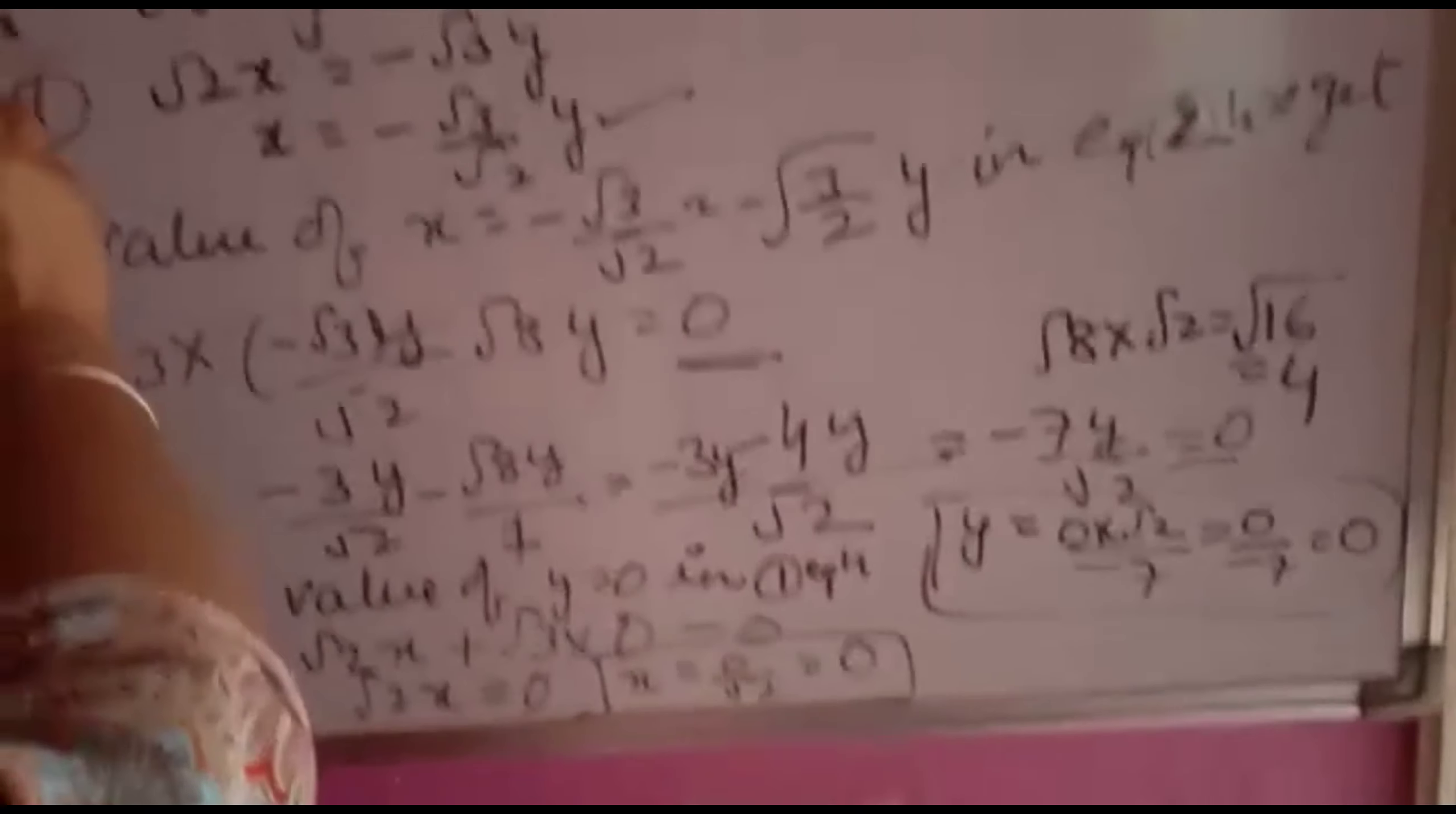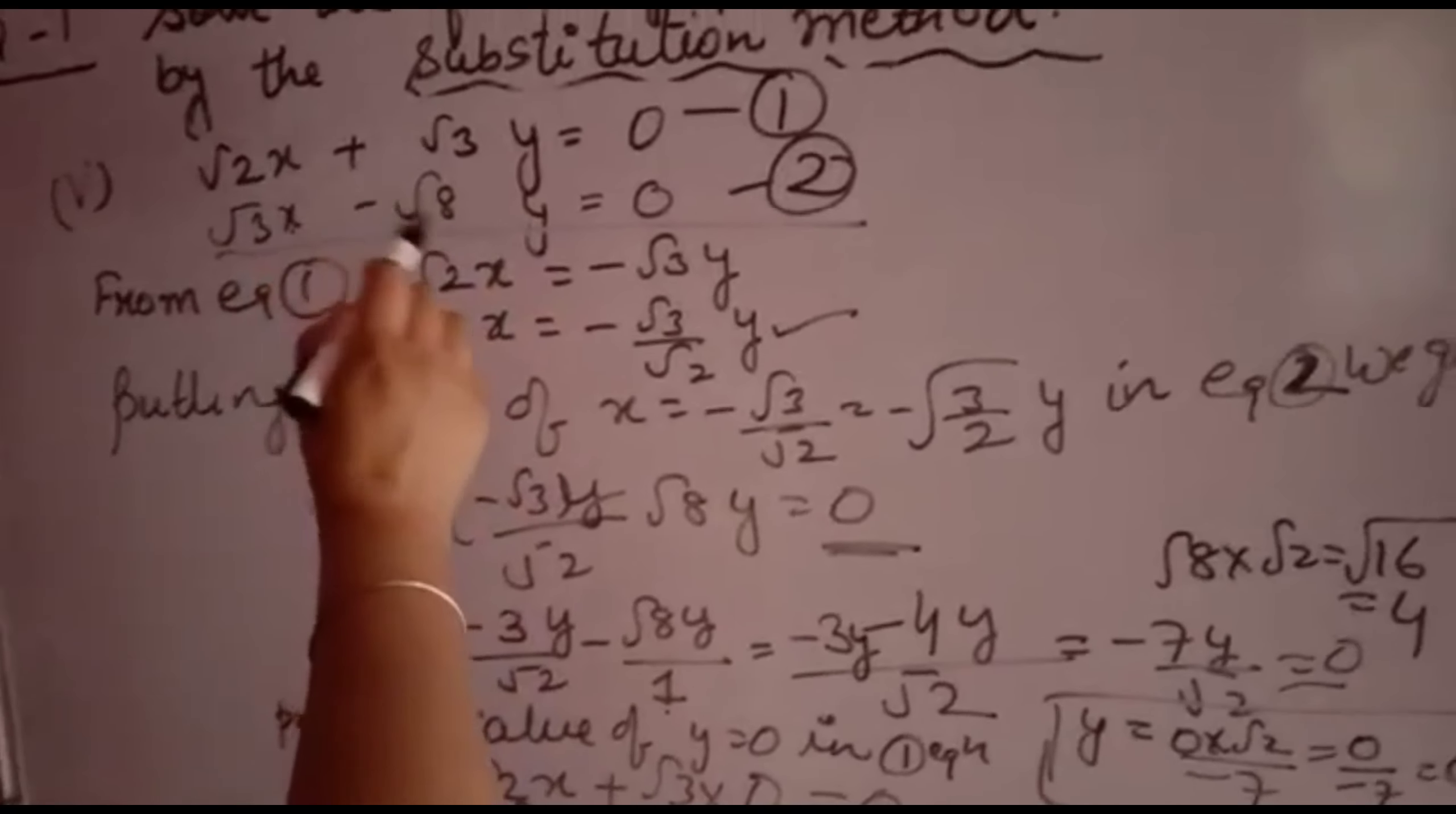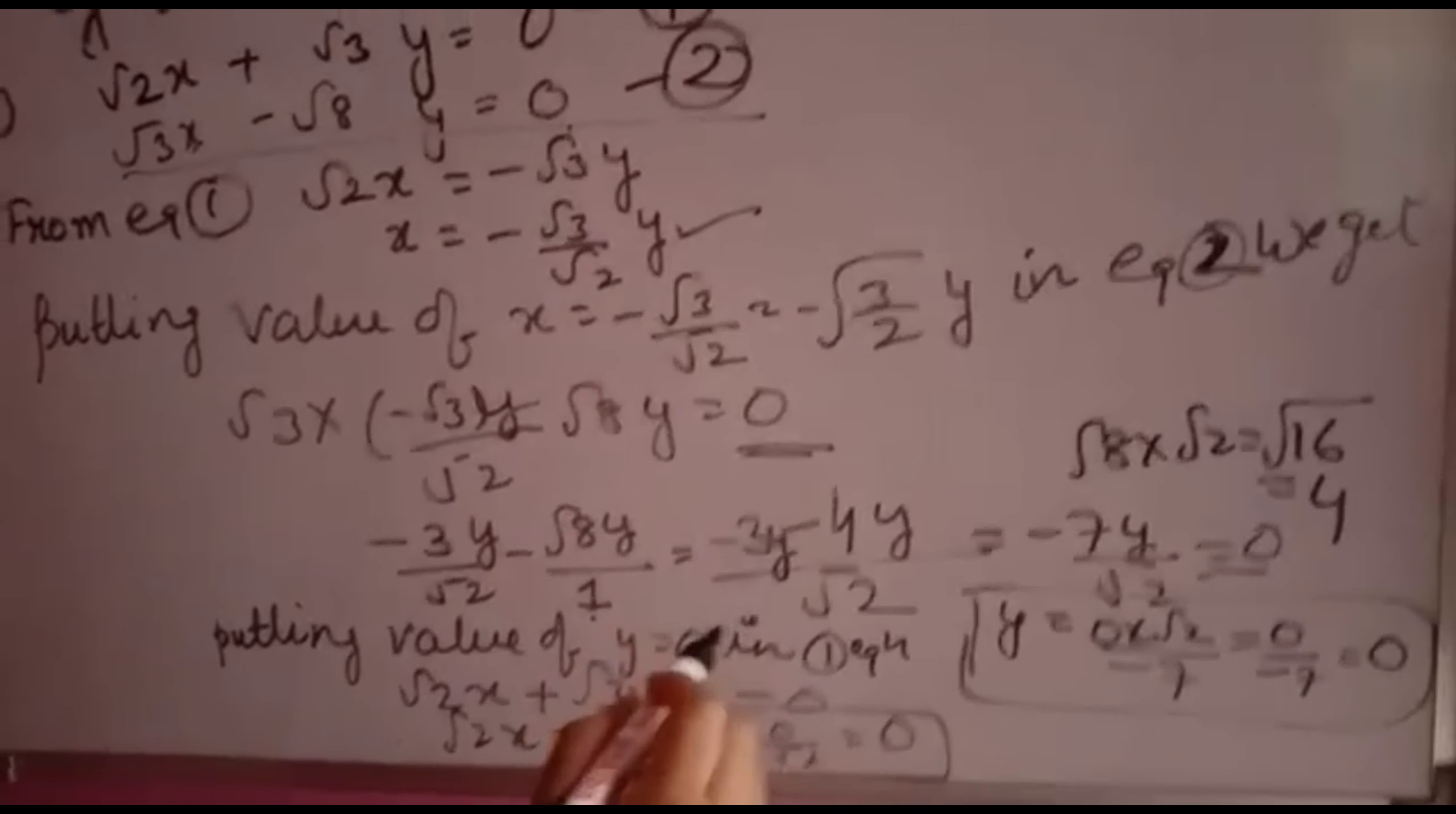Verification: Substituting x = 0 gives √3(0) = 0, and here also 0 - 0 = 0. This means you have solved it correctly. Thank you.